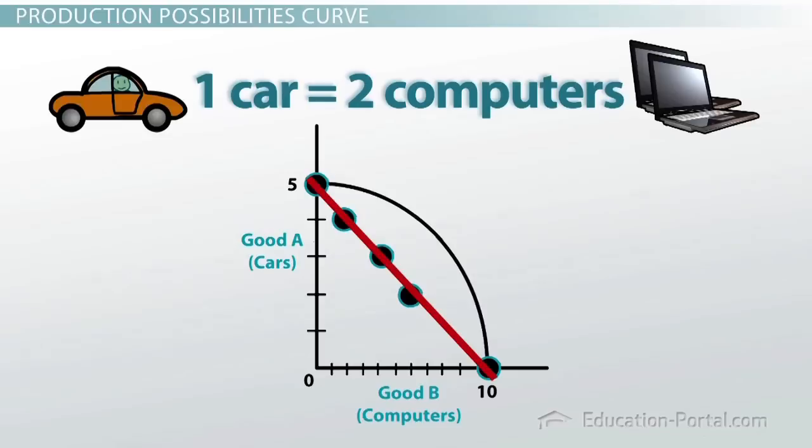Okay, time out. I want to clarify something important. Although the production possibilities model shows a straight line in this example, in the real world, the production possibilities model is a curve. As you produce more and more of one good instead of another, the opportunity costs will increase because some of the resources in an economy are only capable of producing one type of good, which means that switching from one good to another will...